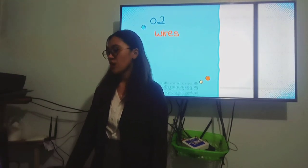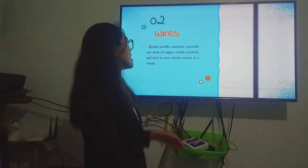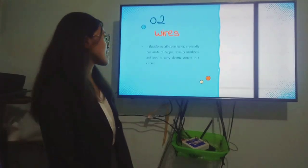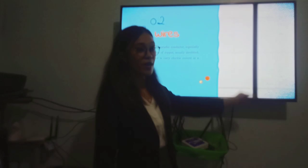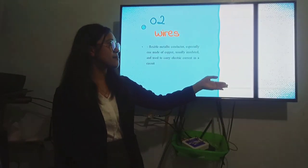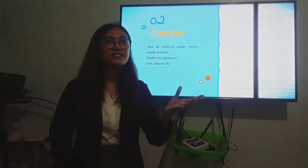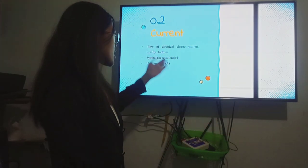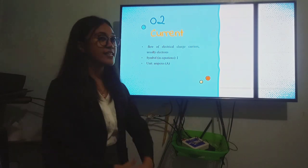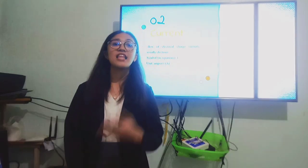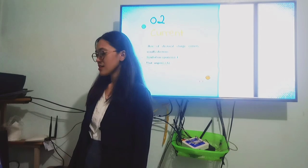Next element is wires. These are flexible metallic conductor, specially made of copper, usually insulated, and used to carry the electric current in a circuit. This is the pathway of our current. And the symbol is just a line. In wires, since this is the path for current, a current is a flow of electrical charge carriers, usually electrons. The symbol of current in equations is a capital I. And the unit is amperes, or capital A.